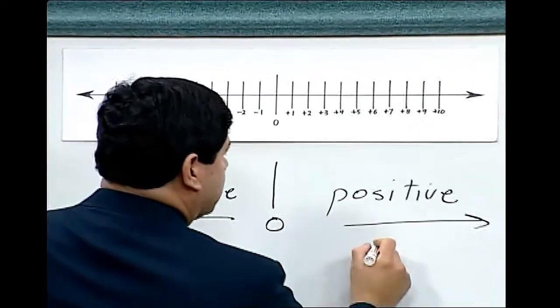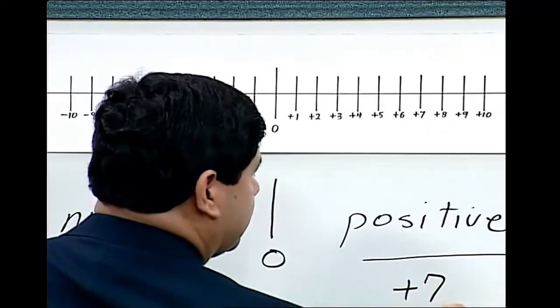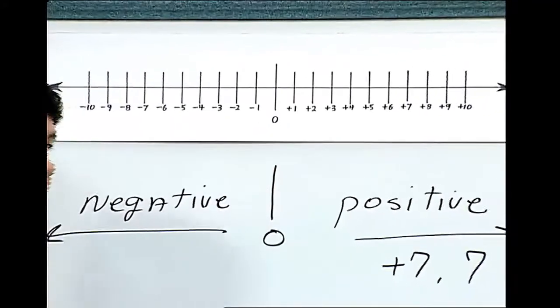Here we have a positive 7, so we can write that as positive 7 or just 7. Either is correct.